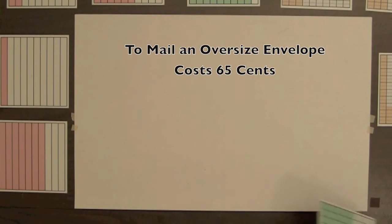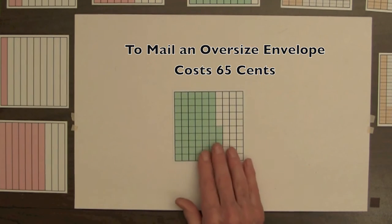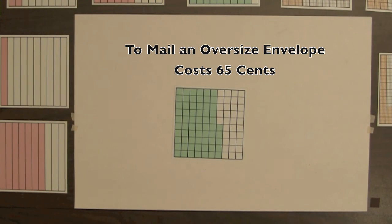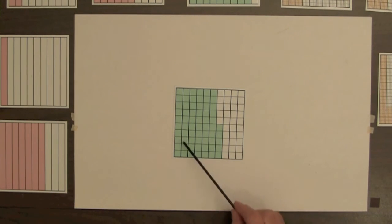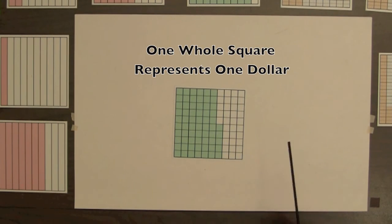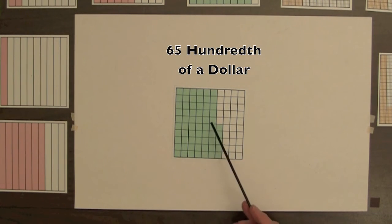Suppose it costs 65 cents to mail an oversized envelope. If one whole square represents one dollar, then this square represents sixty-five hundredths of a dollar.